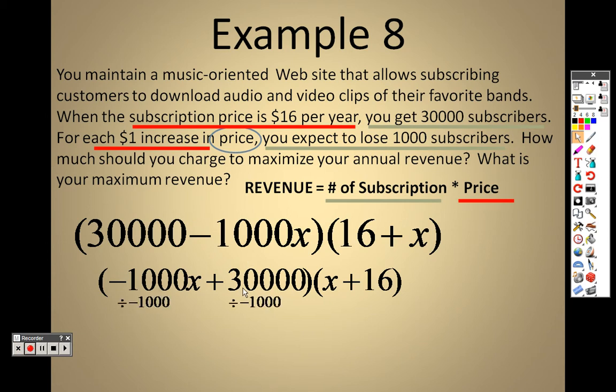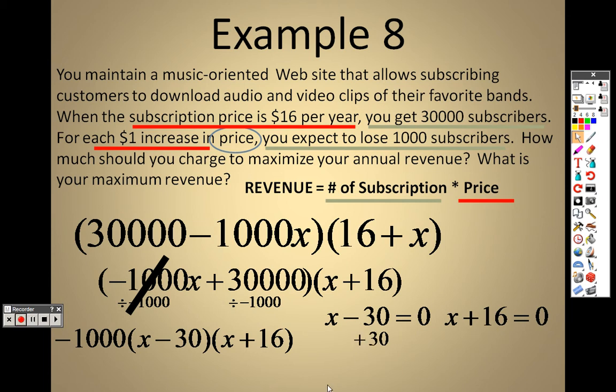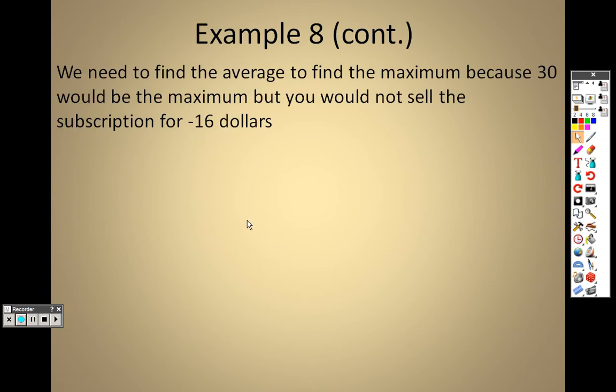I just put the x's in order. I can divide a negative 1,000 on both those. And when I do that, I'm left with negative 1,000 equals x minus 30 and x plus 16. So x minus 30 equals 0. x plus 16 equals 0. If I add 30 to both sides or I subtract 16, I end up getting 30 and negative 16 is my answer. So when we look at this, we need to find the average to find the maximum because 30 would be the max but you would not sell the subscriptions for negative $16.